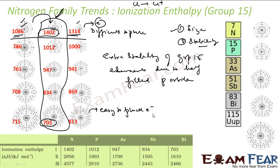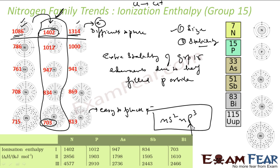The electronic configuration of Group 15 is ns² np³. The p-orbital can hold a maximum of 6 electrons, and with 3 electrons it is half-filled, giving it extra stability. Comparing carbon, nitrogen, and oxygen — more energy is required to pluck one electron from nitrogen. Similarly, comparing silicon, phosphorus, and sulfur — more energy is required to pluck an electron from phosphorus than from silicon or sulfur.